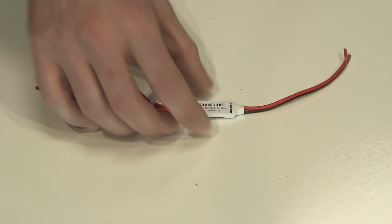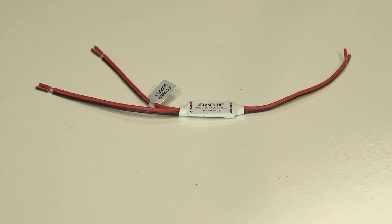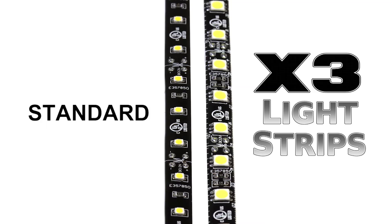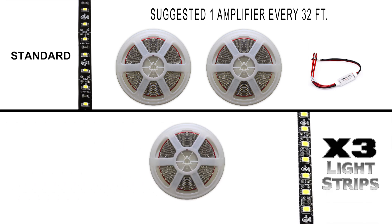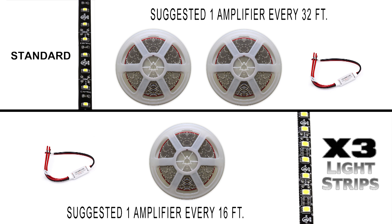We've got amplifiers which are going to help substantially with that. On the Dash X strips we will use an amplifier every 32 feet of strip. On the Dash X3 strips we will need an amplifier at the end of each 16 foot strip. These amplifiers are going to connect between the end of the previous strip and the beginning of the next.